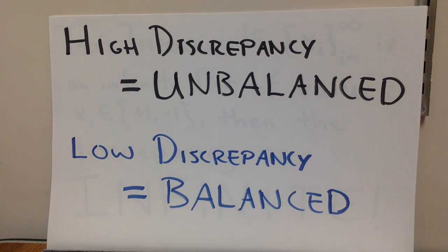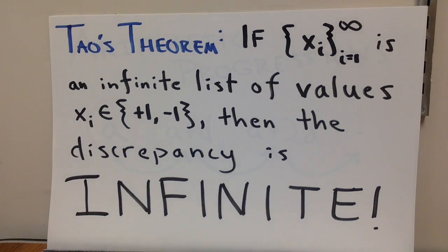So in general, high discrepancy means I'm unbalanced, while low discrepancy means I'm balanced. So we would like to see low discrepancy if possible. And this is what the discrepancy conjecture was asking for, and now what Tao has proven. If I have an infinite list, x sub i, of values taking plus or minus one, then the discrepancy is infinite. It means there's no finite bound. I will always be able to find some sequence like this that will be very far away from zero.